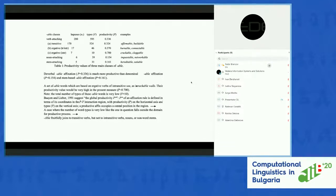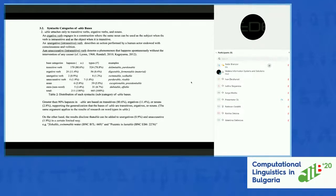Let's go to slide five. Section 3.2: syntactic categories of -able bases. In this section we address the second point from previous studies: that -able attaches only to transitive verbs, adjectival words, and nouns. The 662 -able word types are classified in terms of the syntactic categories of their bases: transitives, additives, intransitives and unaccusatives, nouns, and stems. Each type of verb is defined on the slide.